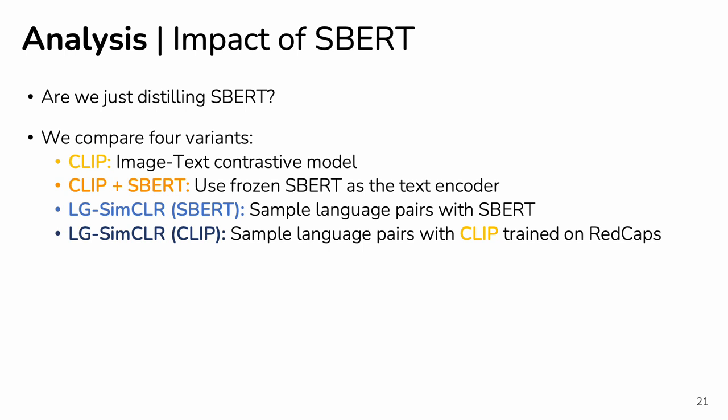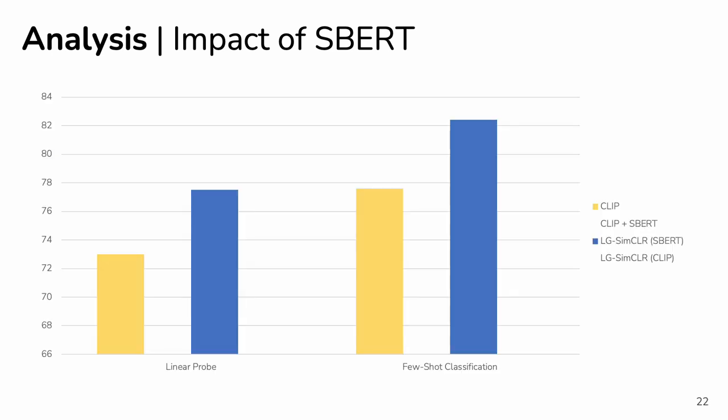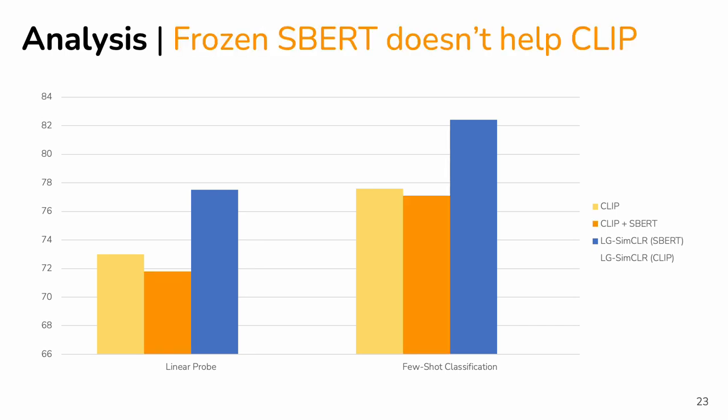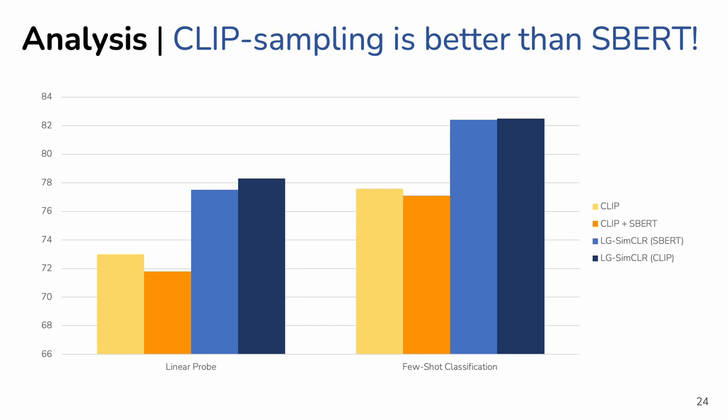We also considered how to remove our own reliance on SBERT by using a CLIP trained on RedCaps to sample our pairs — specifically using CLIP's text encoder — which allows us to train our model without any external data. As noted earlier, language sampling results in a large performance gain over the CLIP model. Adding SBERT to CLIP actually degrades its performance, suggesting that while SBERT features are good locally for nearest neighbor sampling, their global structure is not as helpful for visual representation learning. Sampling with a CLIP trained on RedCaps further improves performance, demonstrating the utility of language-guided learning and its robustness to the specific language encoder.